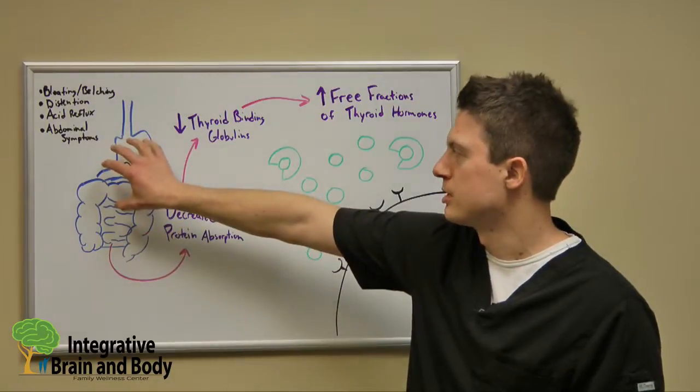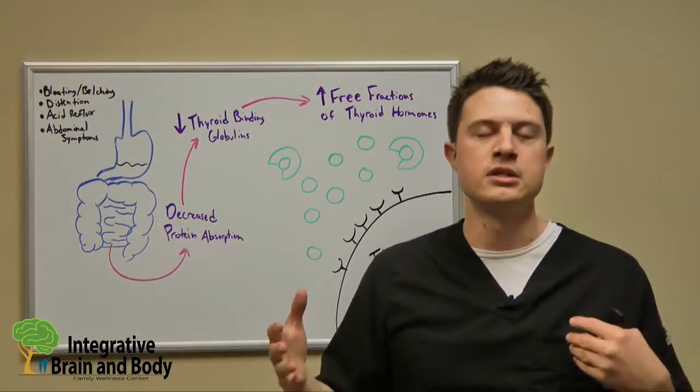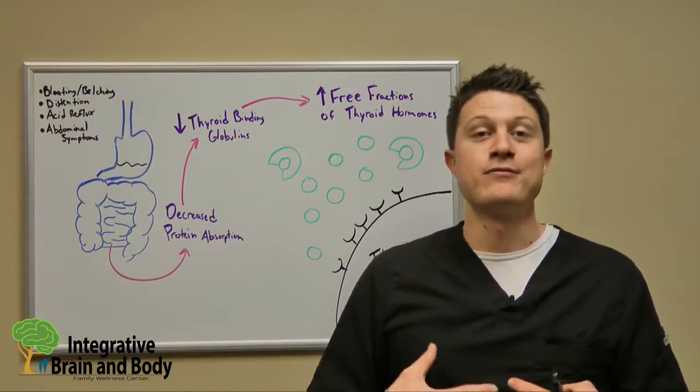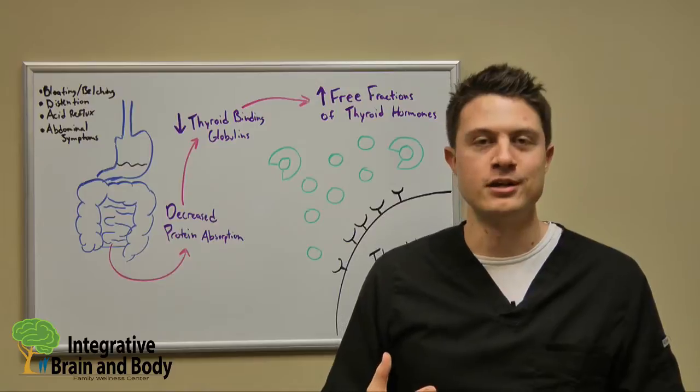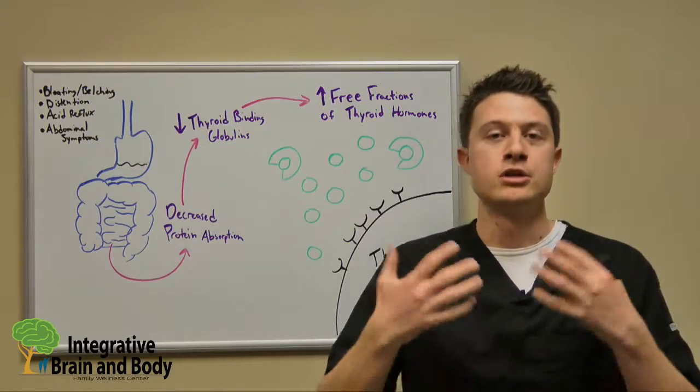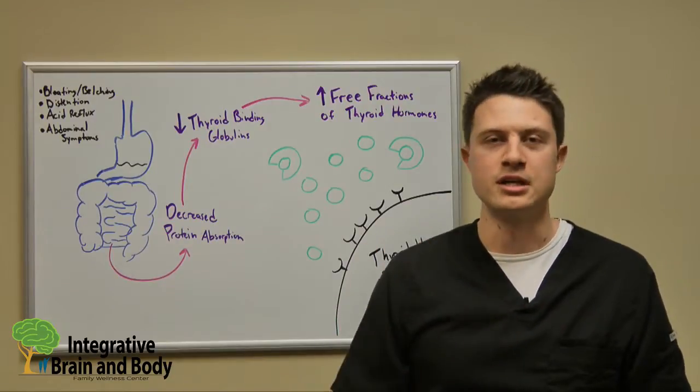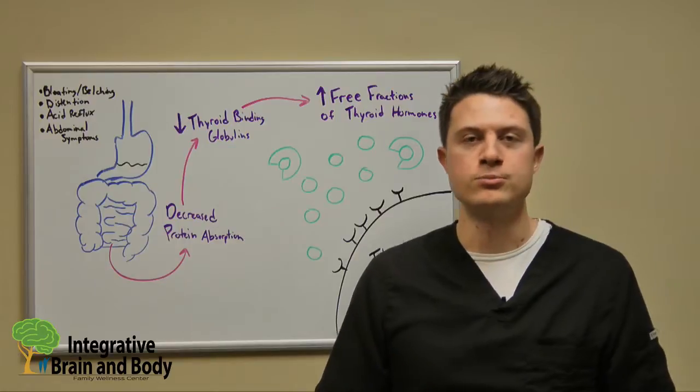When we see decreased stomach acidity, these are the people who eat a whole bunch of food or big protein-containing meals and they feel like they have that food baby for an hour or two afterwards, like their stomach is just distended. Or they might have so much distension that they're belching up or burping up certain types of foods, and it can cause things like acid reflux, heartburn, or other abdominal symptoms.